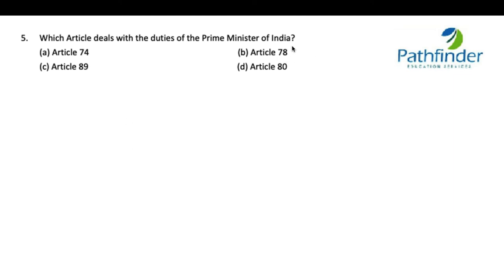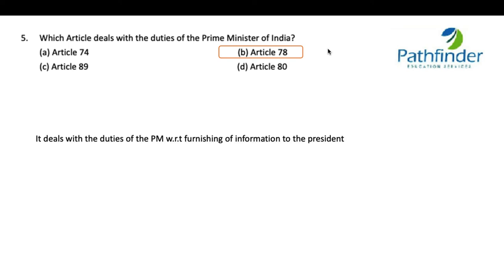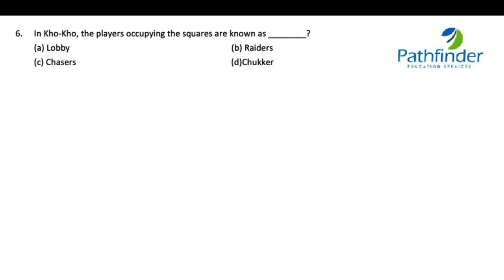Next: which article deals with the duties of the Prime Minister in India? The correct answer is Article 78, which deals with the duties of the Prime Minister with respect to furnishing information to the President.